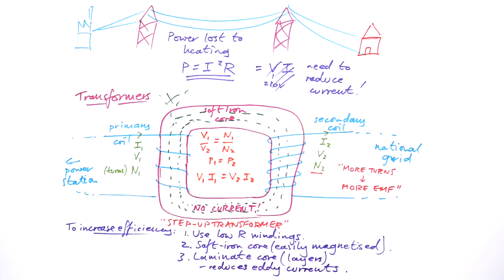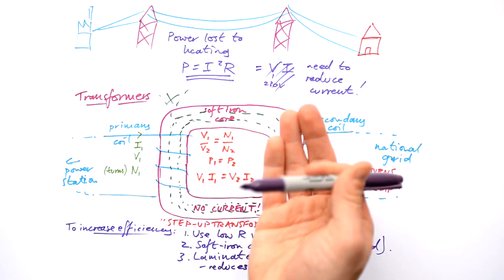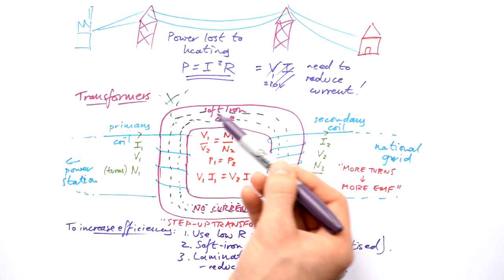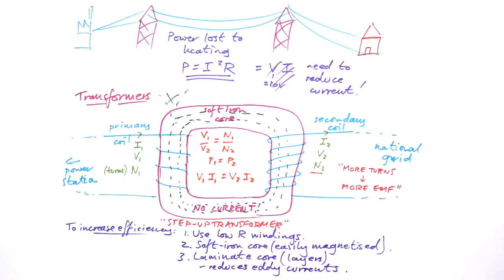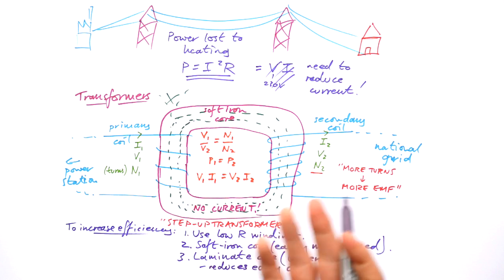So by splitting the core into lots and lots of slices, then we are reducing the amount of current that can flow in the soft iron core itself. Therefore, less heat is lost.